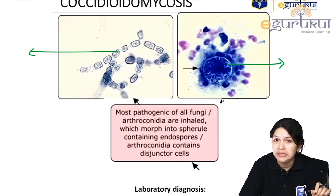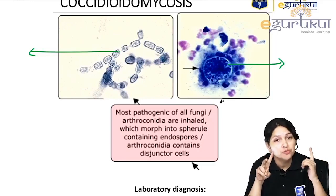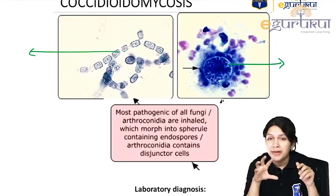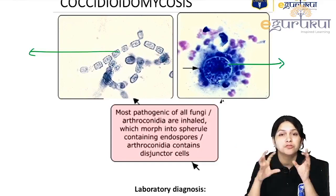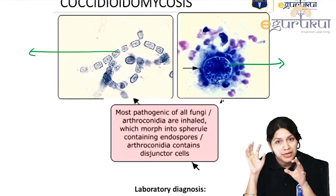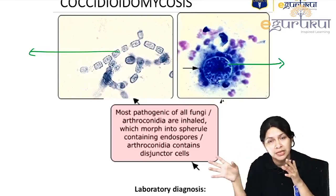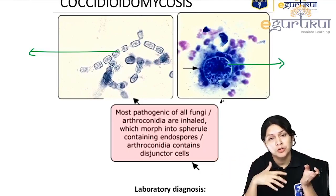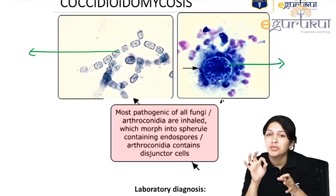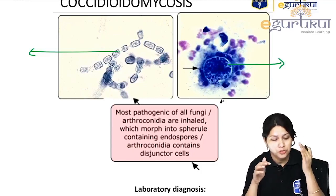Endospores are seen in only two places: Coccidioides immitis in the spherules, and Rhinosporidium seeberi in the sporangium. The sporangium of Rhinosporidium is bigger than the spherule of Coccidioides — that is the first clue to differentiate them. Association with nasal polyps and staining with mucicarmin (as Rhinosporidium is carminophilic) further differentiates these two agents.